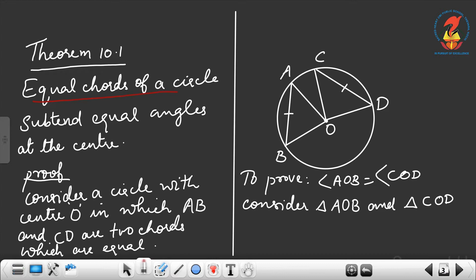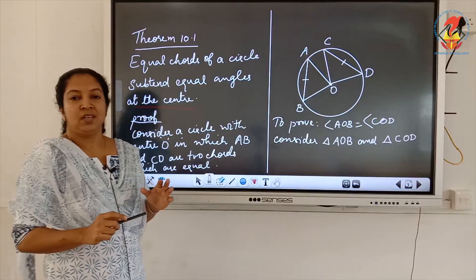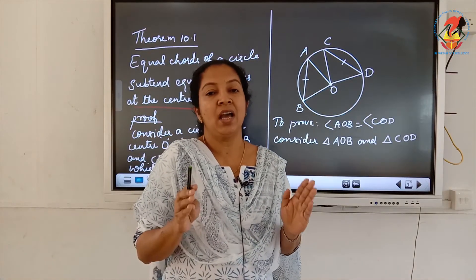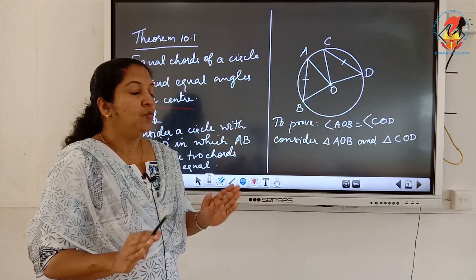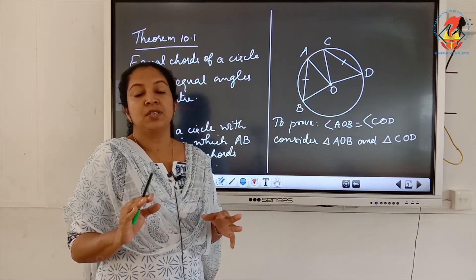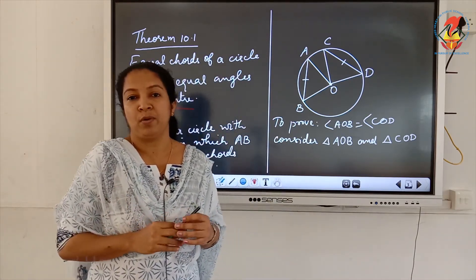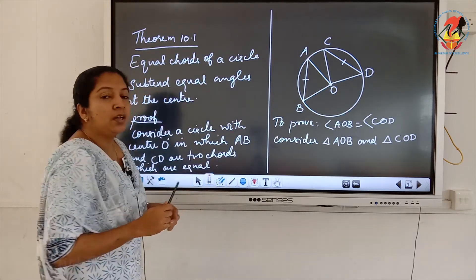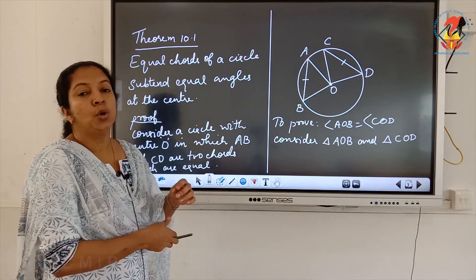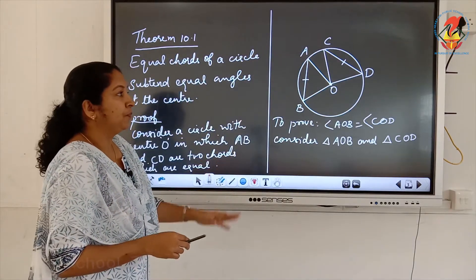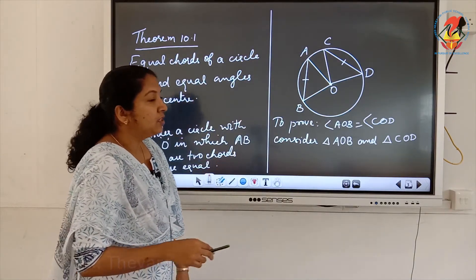Theorem: Equal chords of a circle subtend equal angles at the center. We have to learn this statement by heart because we will use it as a result for solving problems.